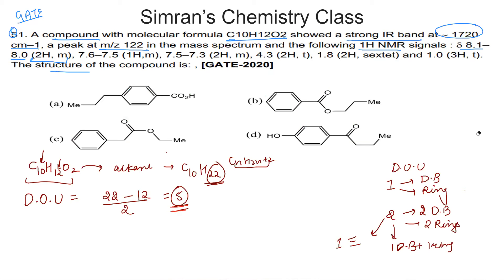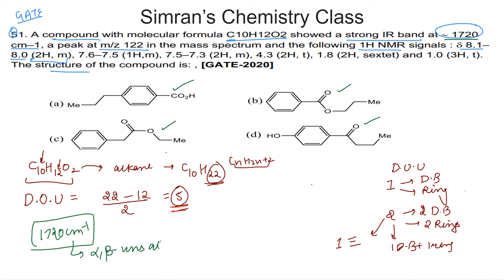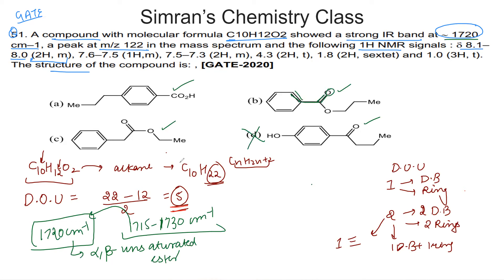Next, we have an IR band at 1720 cm⁻¹. Looking at the options, some show esters, one shows a ketone. An IR absorption at 1720 cm⁻¹ corresponds to an alpha-beta unsaturated ester, which absorbs in the range 1715–1730 cm⁻¹. Based on the IR alone, we can select option B — the alpha-beta unsaturated ester — and rule out options that are not esters or are not alpha-beta unsaturated.